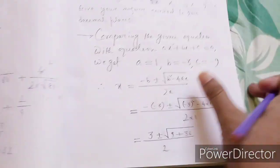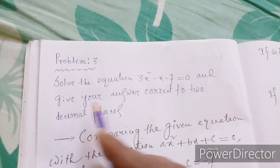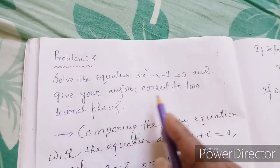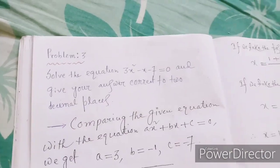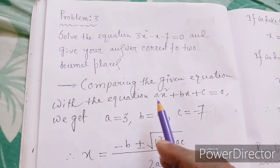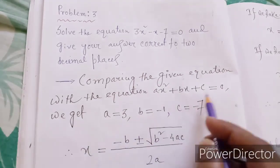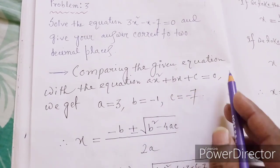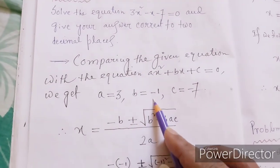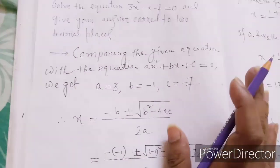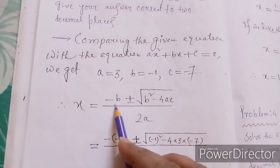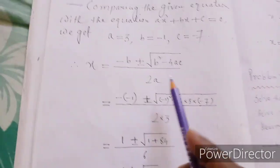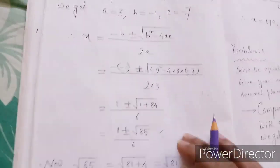Now using that formula, solve the equation 3x² - x - 7 = 0, giving your answer correct to two decimal places. Comparing with ax² + bx + c = 0, we get a = 3, b = -1, c = -7. Using the Sridharacharya formula: x = (-b ± √(b² - 4ac)) / (2a), substituting the values of a, b, c.